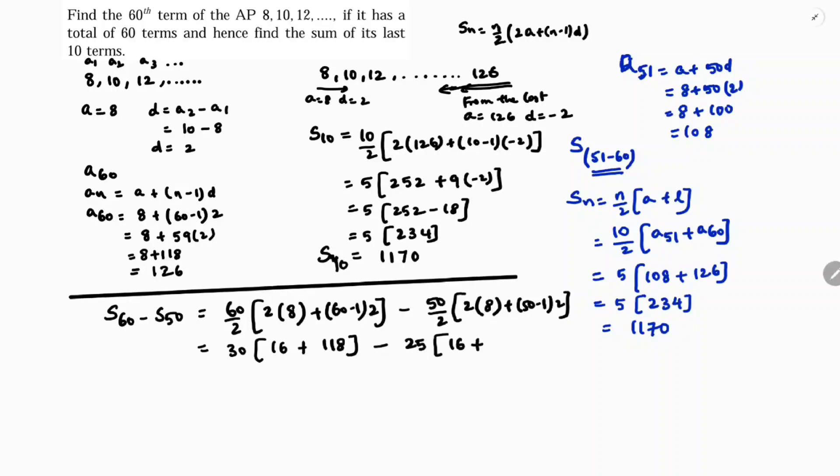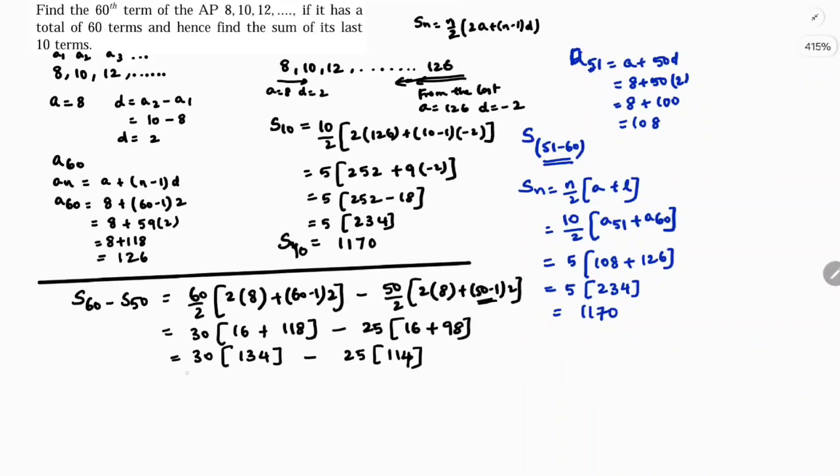Because 50 minus 1 is 49 into 2 is 98. So 30 times 16 plus 118 is 134, minus 25 times 98 plus 16 is 114. Now if we simplify this further, 30 times 134 is 4020 minus 25 times 114 is 2850.